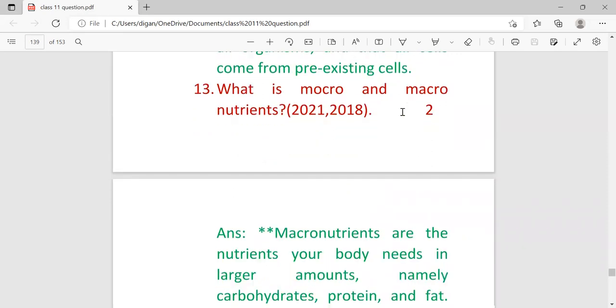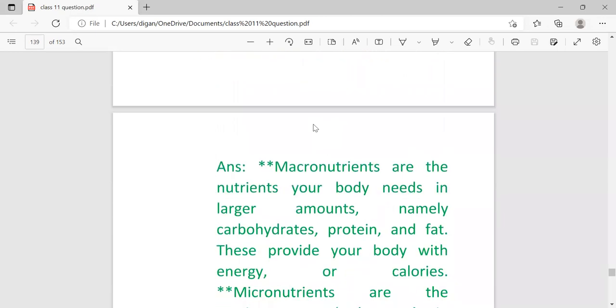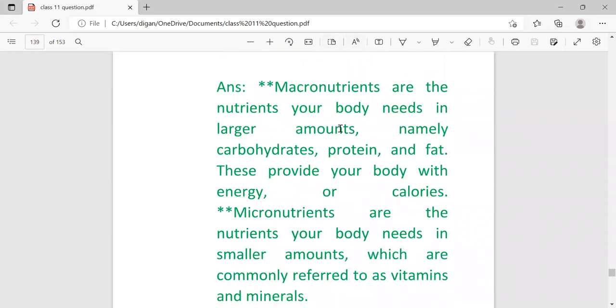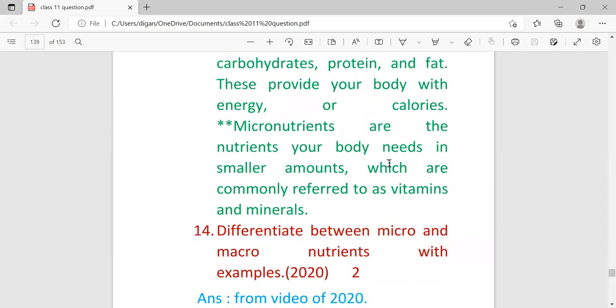What are macronutrients and micronutrients? This was repeated in 2018 and 2021. Macronutrients are the nutrients your body needs in larger amounts, namely carbohydrates, protein, and fat, and they provide your body with energy or calories. Micronutrients are the nutrients your body needs in smaller amounts, which are commonly referred to as vitamins and minerals.